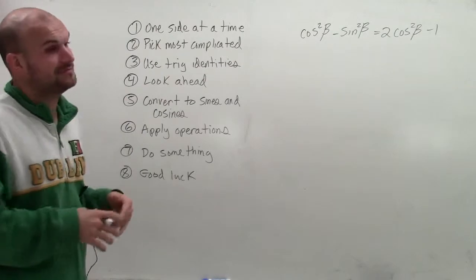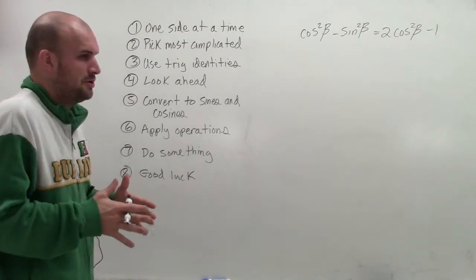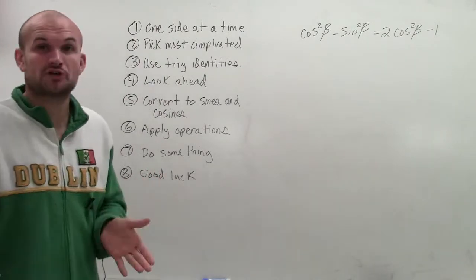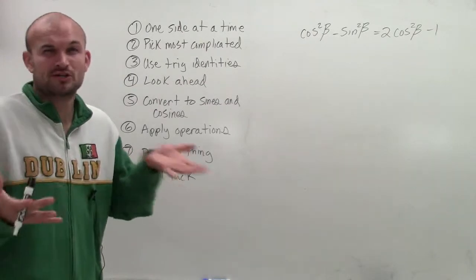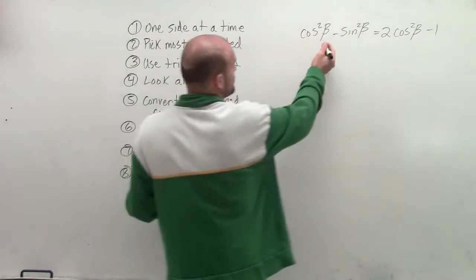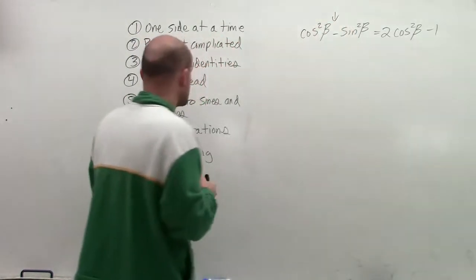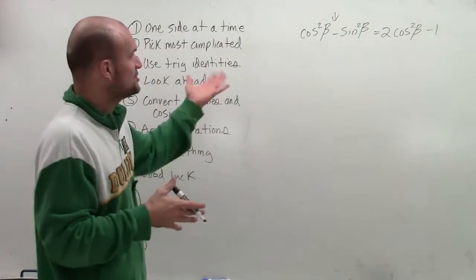Now, in choosing the most complicated side, usually sometimes it has maybe the most terms or maybe the most operations. But it's really kind of arbitrary what you're going to consider the most complicated side. I'm going to choose to work with the left side as my most complicated side. And so by choosing the left side, the next thing I look at is my trigonometric identity.